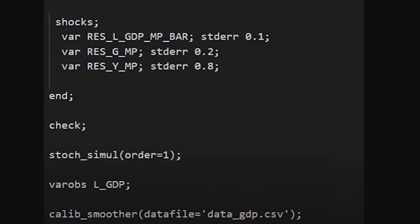Shocks are defined in a shocks block. Standard deviations for the shocks are set as follows: 0.1 for res_lgdp_mp_bar, 0.2 for res_gmp, and 0.8 for res_y_mp. Each line is terminated with a semicolon.